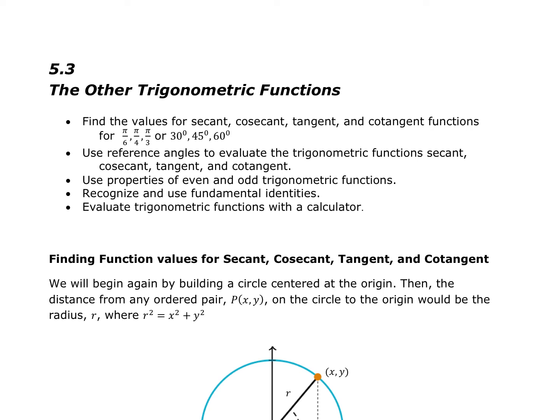In this video, we're going to look at the trigonometric functions of cosecant, secant, tangent, and cotangent. For the π/6, π/4, π/3 multiples — or 30, 45, 60 degree multiples — we're going to use reference angles to evaluate secant, cosecant, tangent, and cotangent. We're going to use properties of odd and even trigonometric functions, recognize and use the fundamental identities, and evaluate the trigonometric functions with our calculator.